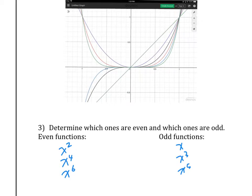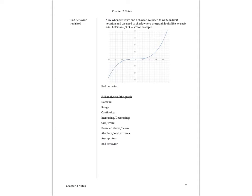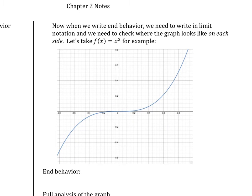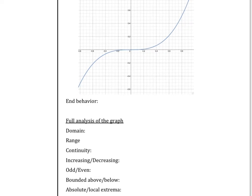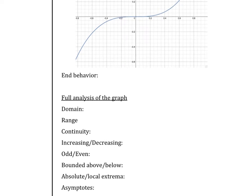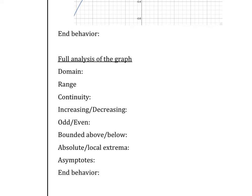Now we're going to look at end behavior again. All the ones that are even and all the ones that are odd are going to look the same at the end — the end behavior. Let's look at x cubed as an example. We're going to rethink about end behavior. Before we do that, let's see how much you remember. Do everything up to end behavior — we're going to do something different for that part. Analyze this function just like you did for chapter one.